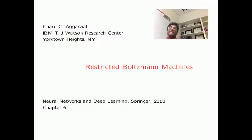In this video, we will introduce the restricted Boltzmann machine. The restricted Boltzmann machine is a neural network which belongs to the class of probabilistic graphical models. These neural networks are very different from conventional neural networks in that they work using discrete sampling from states with probabilistic dependencies among them.